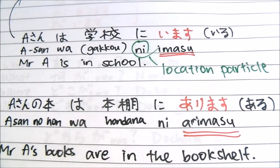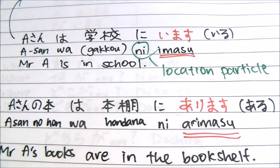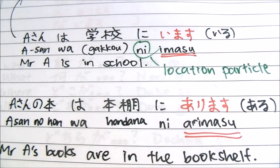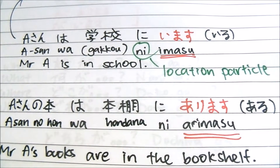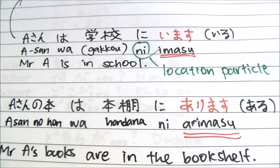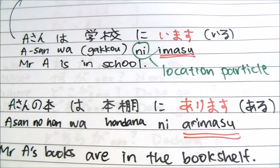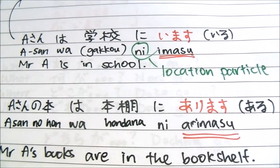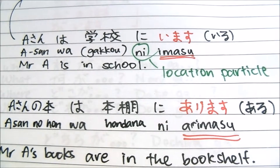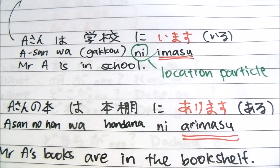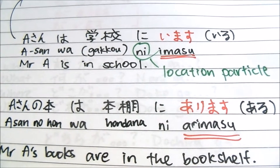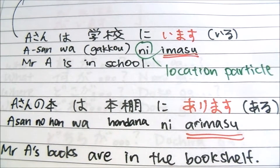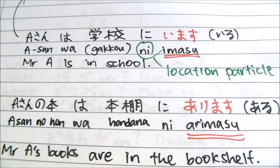Take a look at 'A-san wa gako ni imasu' — the first sentence. You can see that 'imasu' is a Group 2 verb. It comes from the word 'iru'. Just like 'taberu' becomes 'tabemasu', 'iru' becomes 'imasu'. You can see that Mr. A is in school.